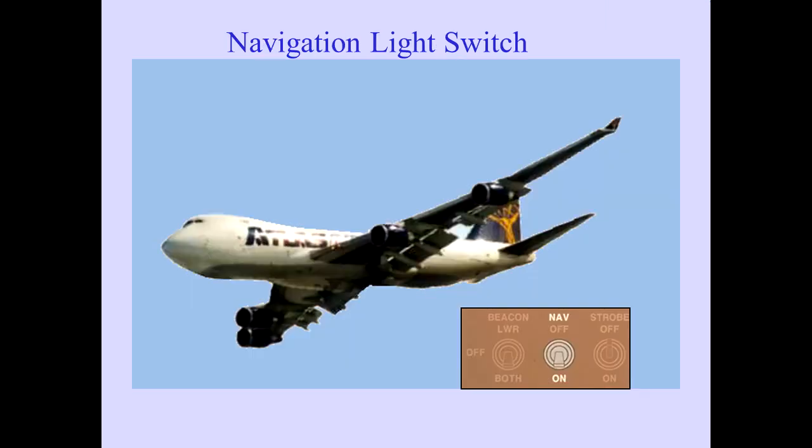The navigation light switch controls two green lights in the right wing leading edge, two red lights in the left wing leading edge, and two white lights in the tail cone.